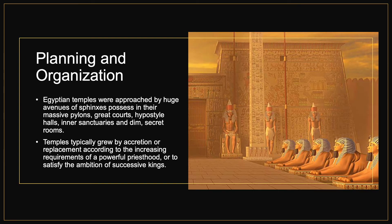Egyptian temples were approached by huge avenues of sphinxes and possessed massive pylons, great courts, hypostyle halls, inner sanctuaries, and sometimes secret rooms. Temples typically grew by accretion or replacement according to the increasing requirements of a powerful priesthood or to satisfy the ambition of successive kings. Some temples and pyramids were carefully situated based on astronomical events. The development of these temples, tombs, and structures was a demonstration of the civilization's evolution — economically and politically — and they were used to record wars and other events, physically narrating stories through architecture.